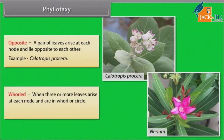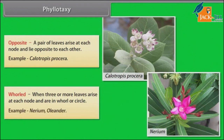Whorled: when three or more leaves arise at each node and are arranged in a whorl or circle. Example: Nerium oleander.